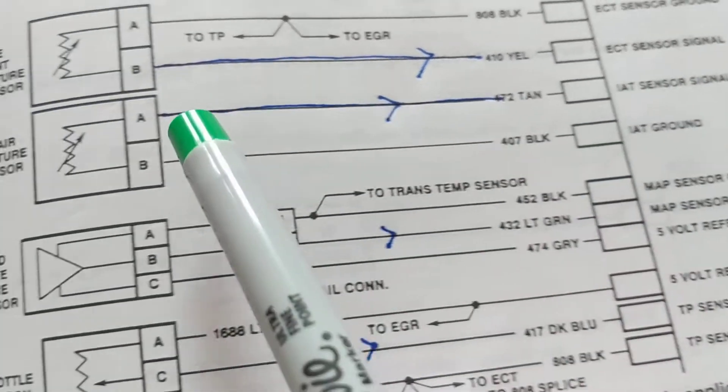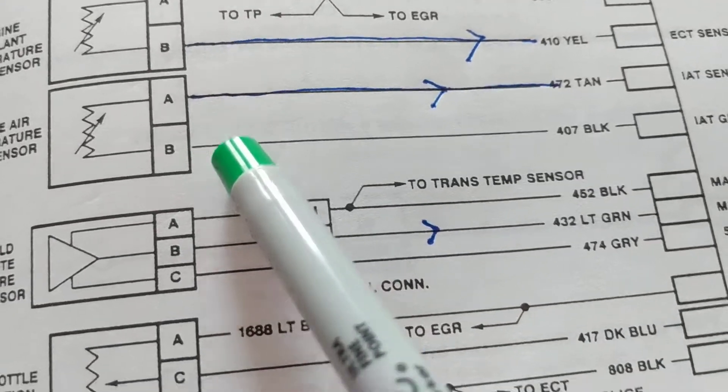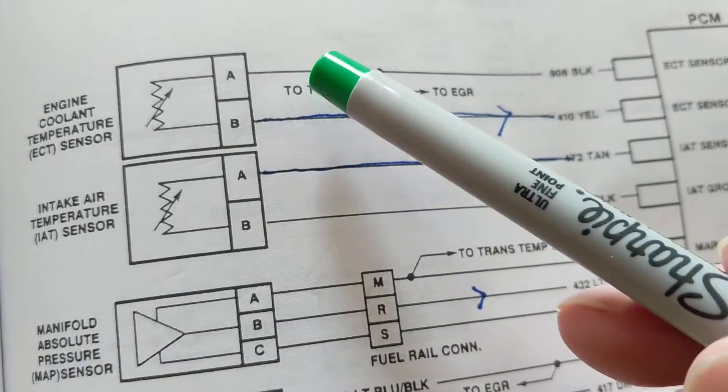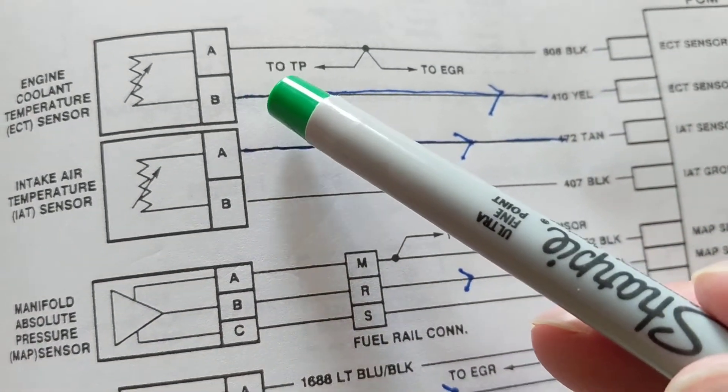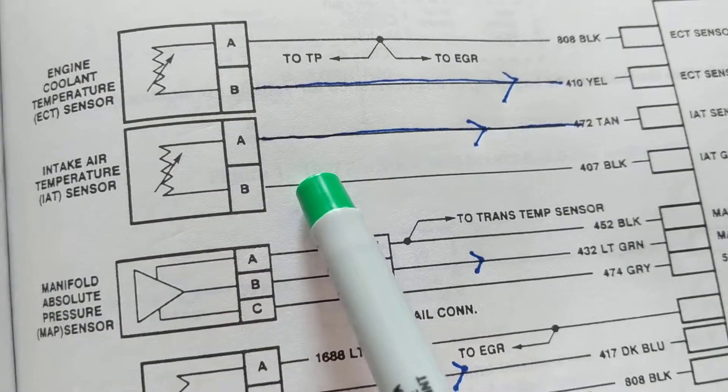Therefore again, if you look for these sensors, expect to see two pins, two wires. This one and this one. So you know you're searching in the right place for that sensor.